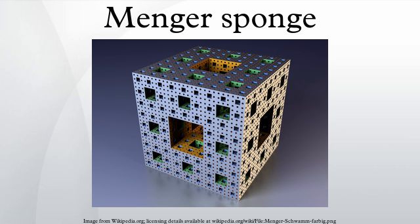Mega Menger is a project aiming to build the largest fractal model, pioneered by Matt Parker of Queen Mary University of London and Laura Taalman of James Madison University. Each small cube is made from six interlocking folded business cards, giving a total of 960,000 cards for a level 4 sponge. The outer surfaces are then covered with paper or cardboard panels printed with a Sierpinski carpet design to be more aesthetically pleasing. In 2014, 20 level 3 Menger sponges were constructed, which combined to form a distributed level 4 Menger sponge.